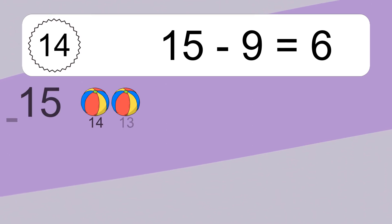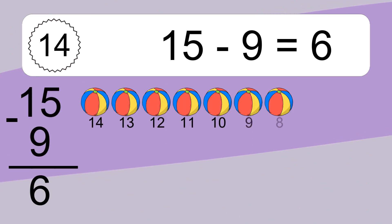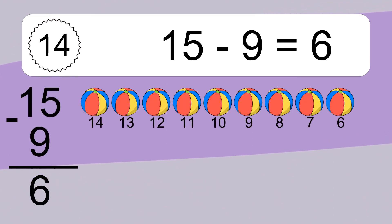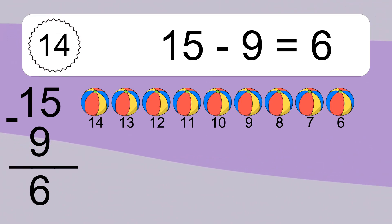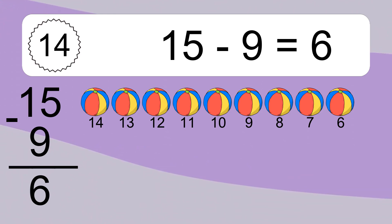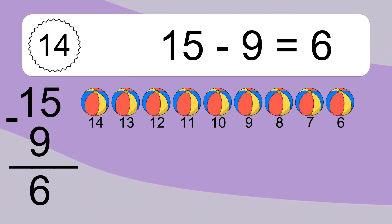15 minus 9 equals what? 15 minus 9 equals 6. Let's count it: 14, 13, 12, 11, 10, 9, 8, 7, 6.